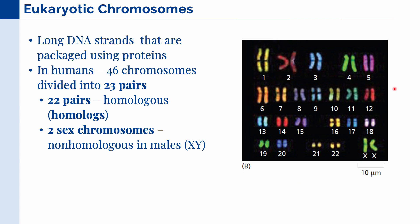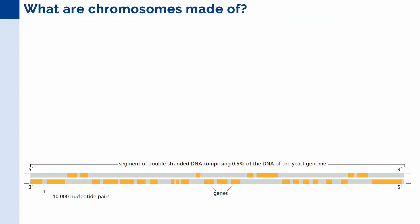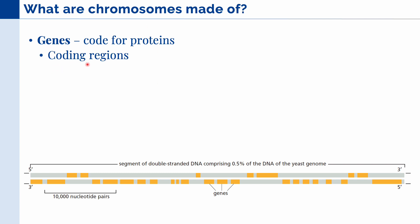If we take all of these chromosomes together, we have what we call the genome, which is the full set of chromosomes. Next, let's take a look at what chromosomes are made of. First, they are made of genes or regions that code for proteins and other products. In this example, we can see those different regions highlighted in yellow. Because they code for products, they are also known as coding regions.